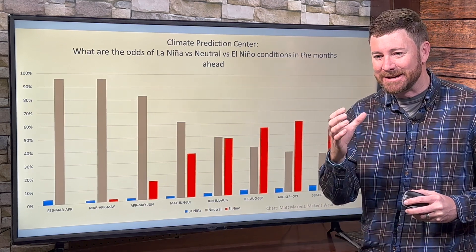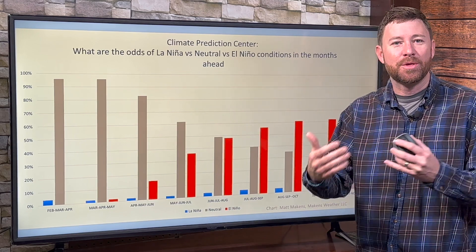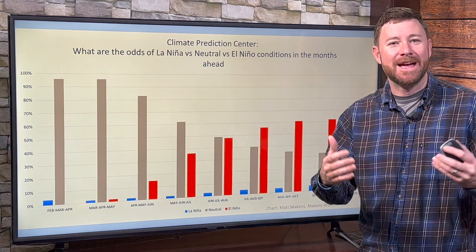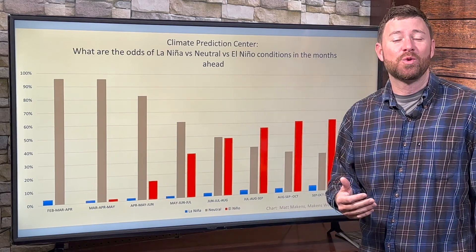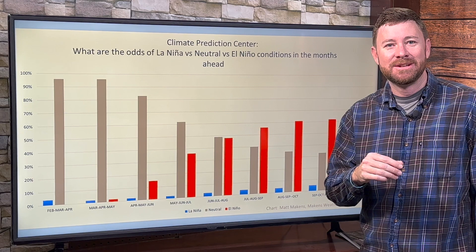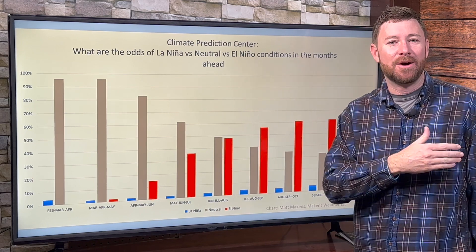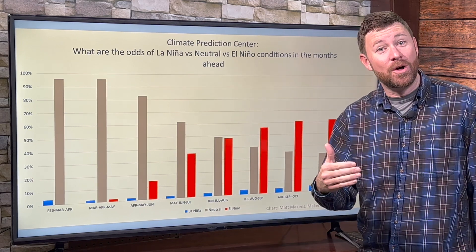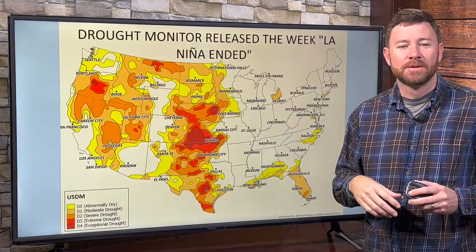The spring predictability barrier is a thing — it happens around late February through March into early April. That's when forecast skill for these things is the lowest throughout the course of the year. So there's some error to be discussed, but La Nina is on the way out. Neutral is coming in. For how long? We'll see. But El Nino is going to be knocking on the door.